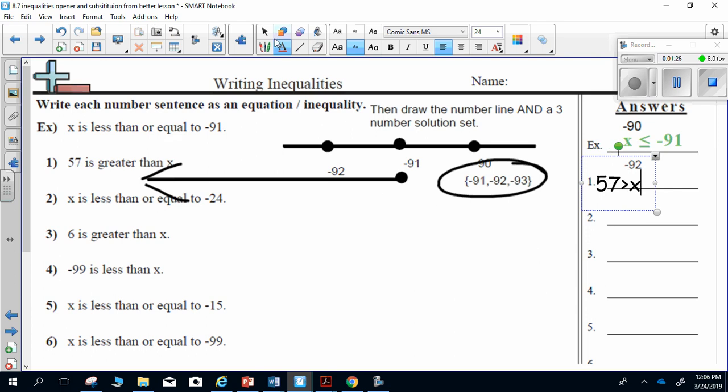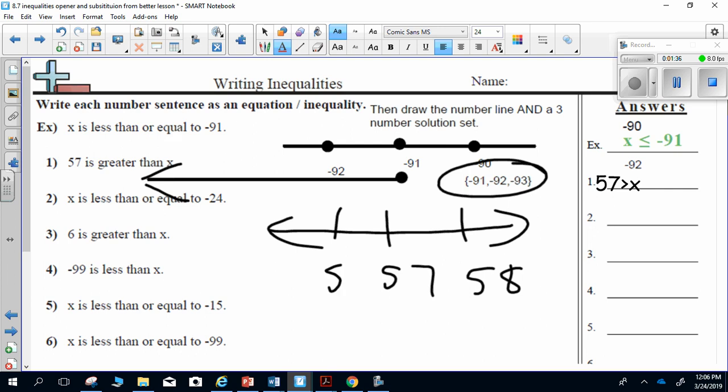So the first thing I'm going to do is draw my number line. 57 goes in the middle. 58 and 56. So 56, 57, 58. These are going to go to the right and ascend. These are going to go to the left and descend.